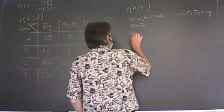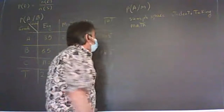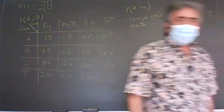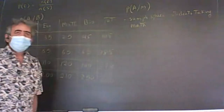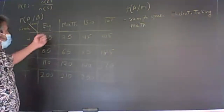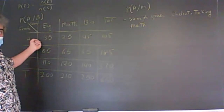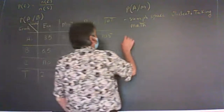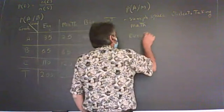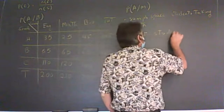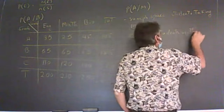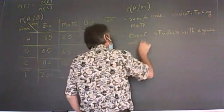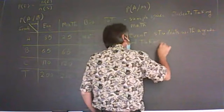So thinking about this, let's think about the event. What is my event? The event is students with an A grade and also in math. Last time we said when we have 'and,' we have intersection. So the event is students with A grade and taking math.